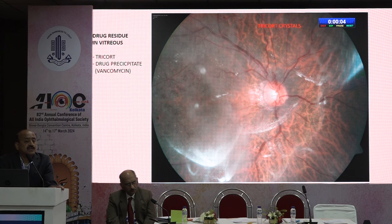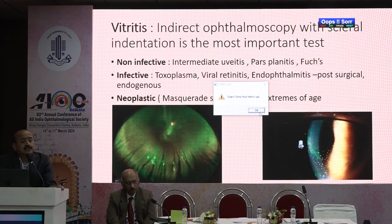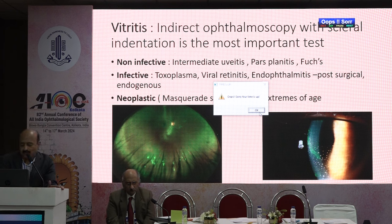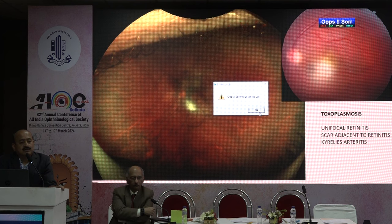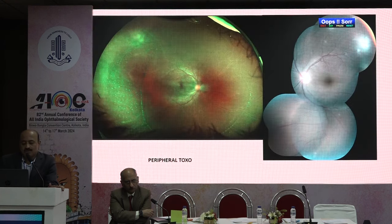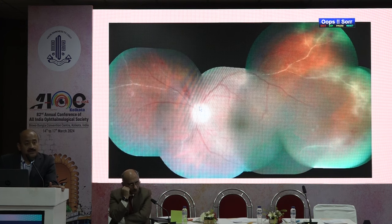Sometimes intravitreal injections can precipitate — vancomycin and ceftazidime can cause whitish opacities. If there are signs of inflammation, this is vitritis — do not forget to examine the anterior segment. The key to distinguishing vitritis from other causes is a proper evaluation of the anterior segment. If you see a whitish or yellowish opacity on the retina, it could be an infective pathology — the most common cause being toxoplasmosis. You can also have acute retinal necrosis. To summarize: do a good examination of the retina to rule out infective conditions.